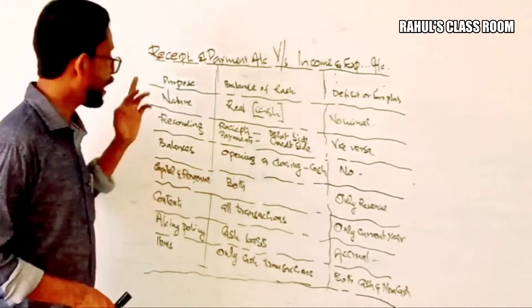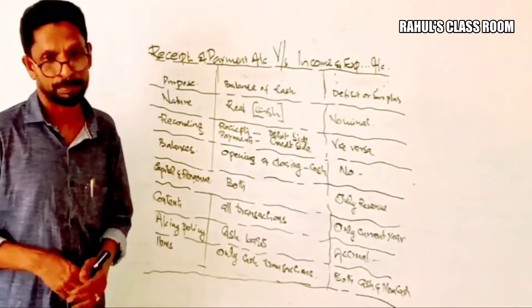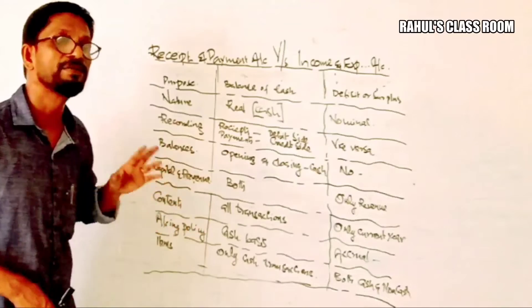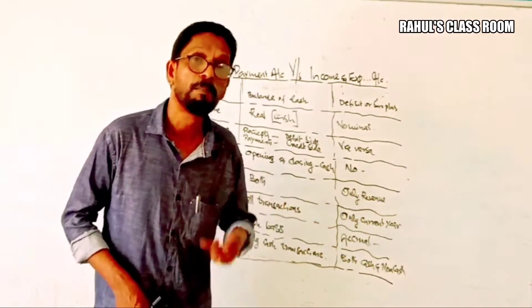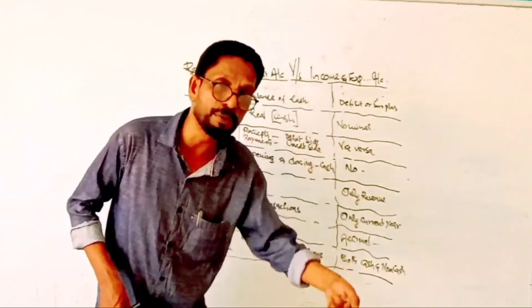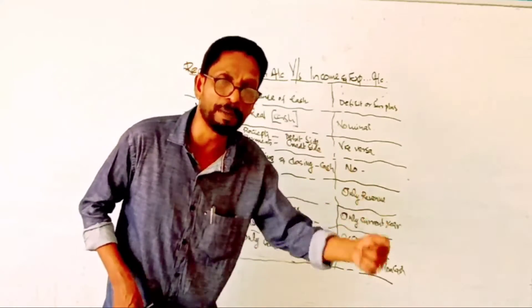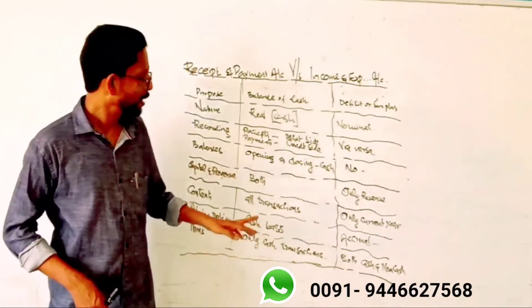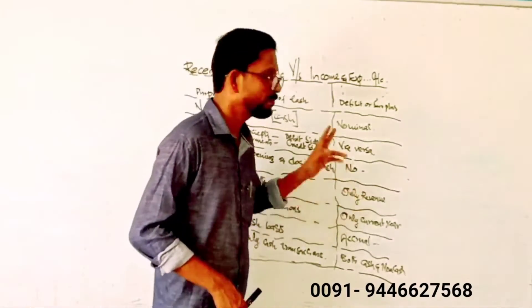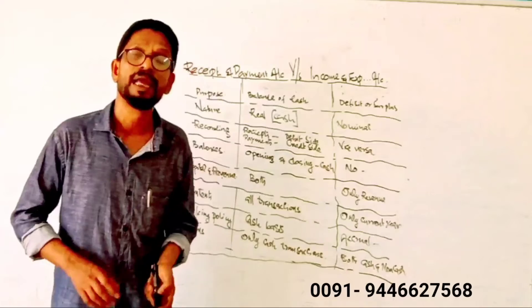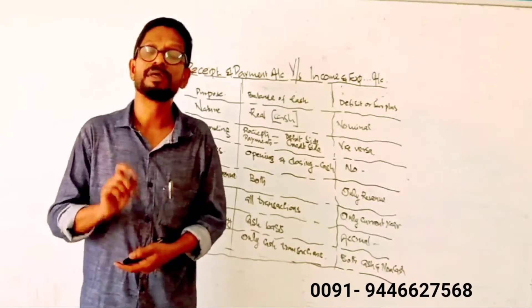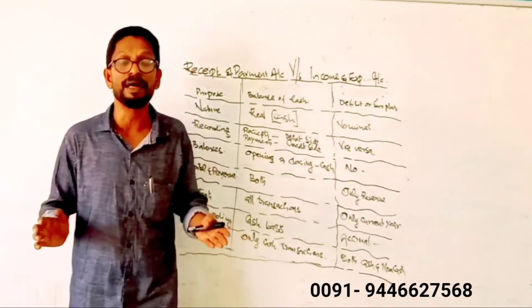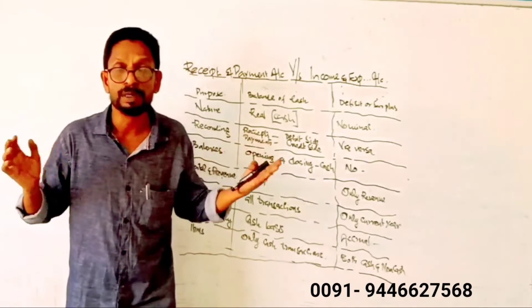The sixth difference is Capital and Revenue items. In the Receipt and Payment Account, it records both revenue receipts and revenue payments as well as capital payments. But in the case of the Income and Expenditure Account, it records only the revenue items — that means revenue payments and revenue income.